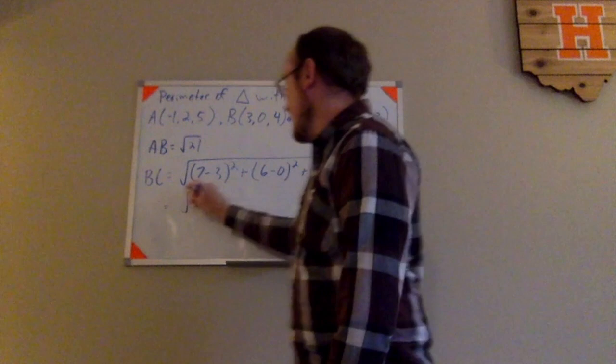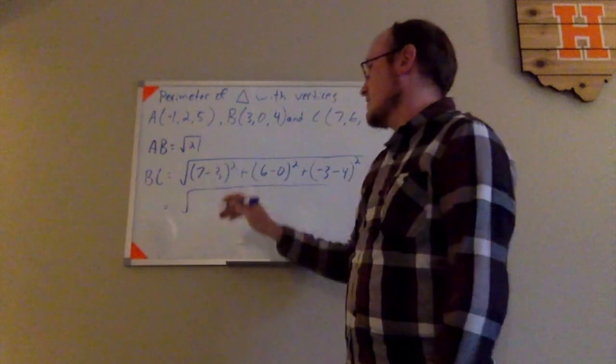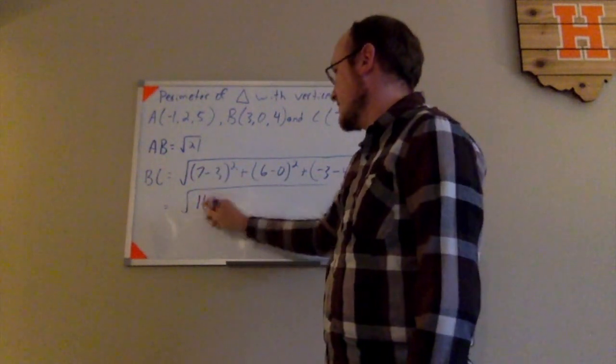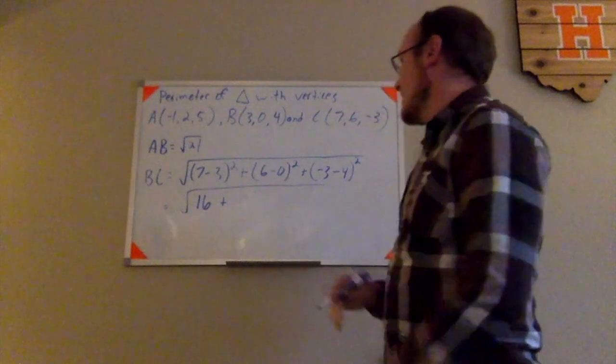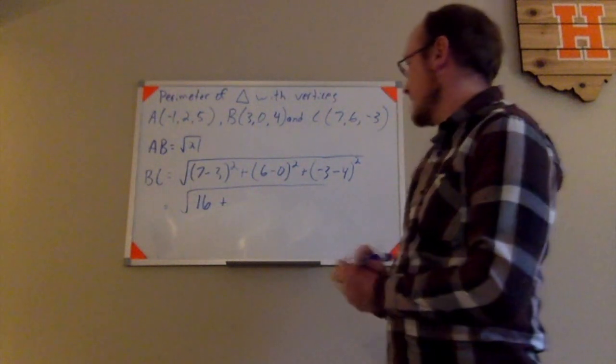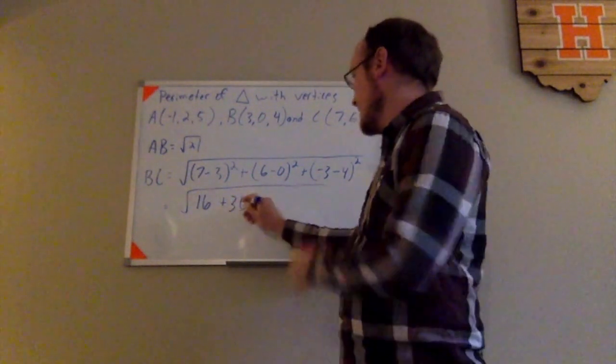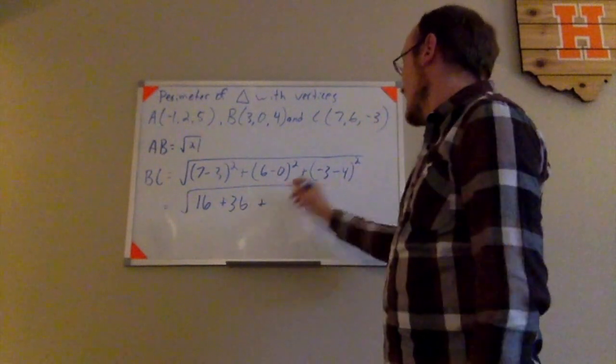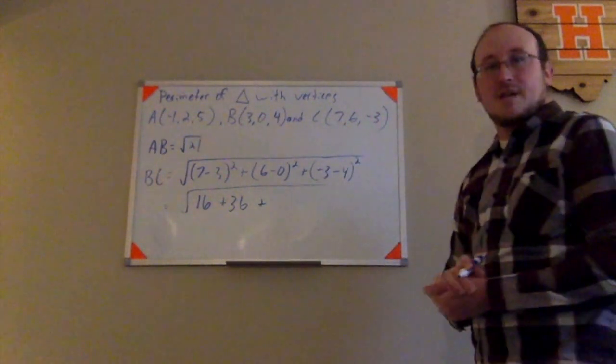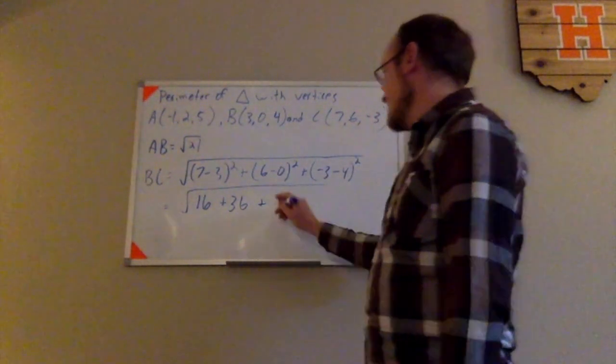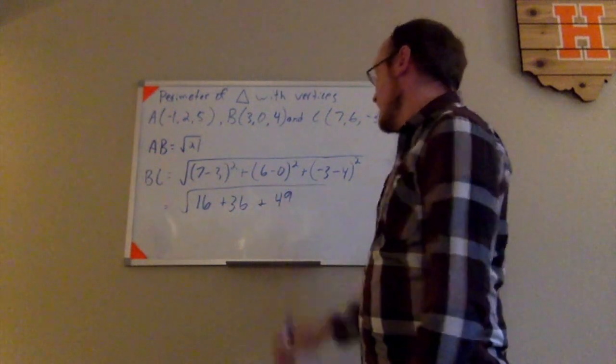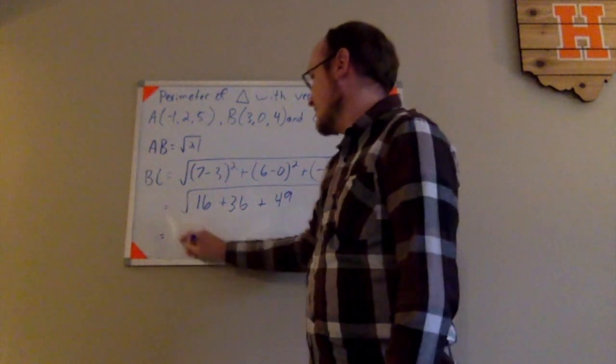Go ahead and simplify. So let's simplify. 7 minus 3 is 4. 4 squared is 16. 6 minus 0 is 6. 6 squared is 36. And negative 3 minus 4 is negative 7. Negative 7 squared is 49. So now I need to go ahead and add those together.